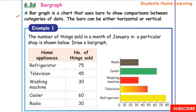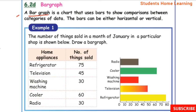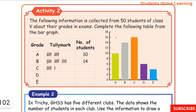Bar Graph: A bar graph is a chart that uses bars to show comparison between categories of data. The bars on a bar graph can be either horizontal or vertical.